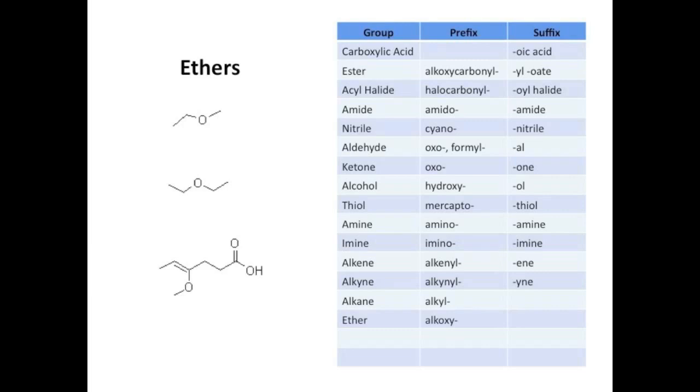So, ethers are really easy. They take the prefix alkoxy-, which makes our first example methoxyethane. Example 2 is a substance you're familiar with. In lab, when you see a bottle labeled ether, that is actually diethyl ether or ethoxyethane under IUPAC nomenclature. Example 3 is another MCAT difficulty type molecule. It is Z-4-methoxy-4-hexenoic acid. And finally, I didn't put an example on here, but 3-membered cyclic ethers are called epoxides or oxiranes.